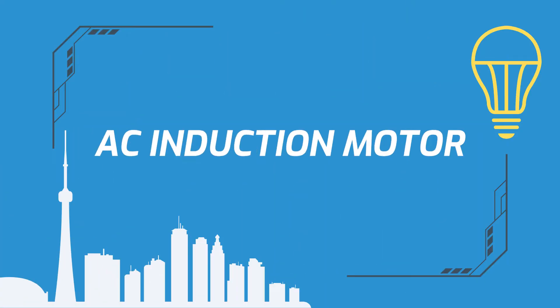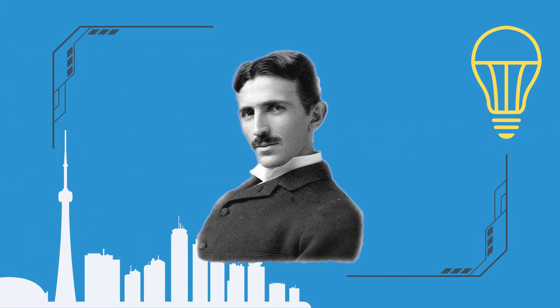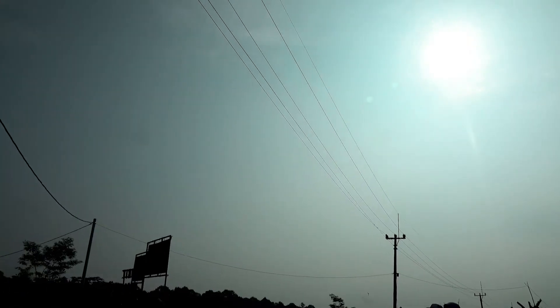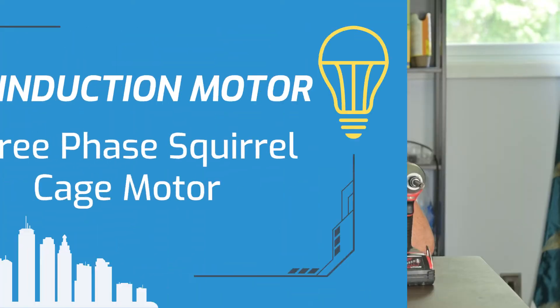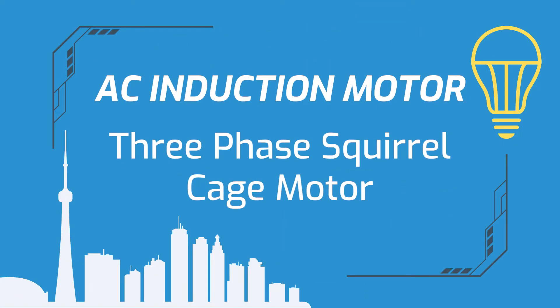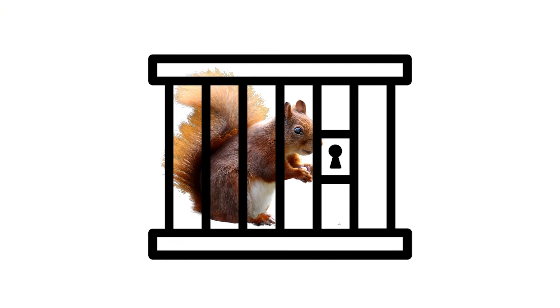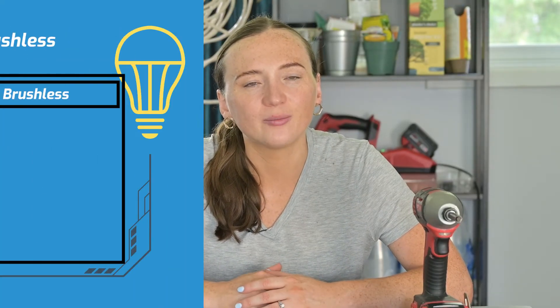The AC induction motor is an asynchronous motor that was invented by Nikola Tesla in 1887, and it's been given credit for drastically improving energy generation and making the long-distance distribution of electricity possible. The induction motor has been further developed since then for power and efficiency, and now the most common type of AC motor is a newer variation called the three-phase squirrel cage motor. So when we're comparing AC motors to DC motors, that's the AC motor we're talking about.